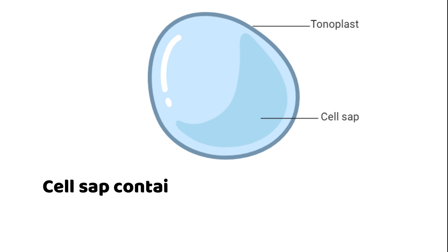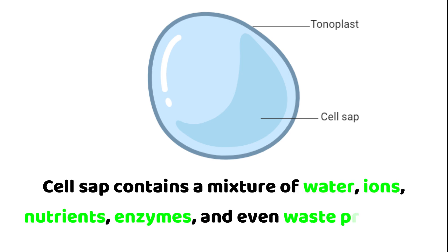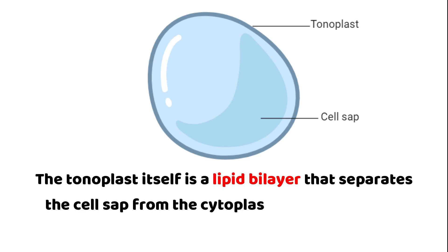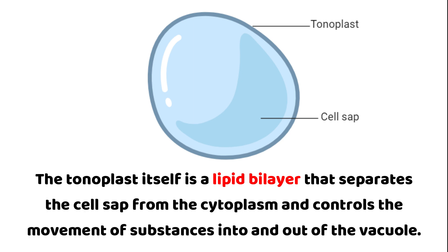This fluid contains a mixture of water, ions, nutrients, enzymes and even waste products. The tonoplast itself is a lipid bilayer that separates the cell sap from the cytoplasm and controls the movement of substances into and out of the vacuole.